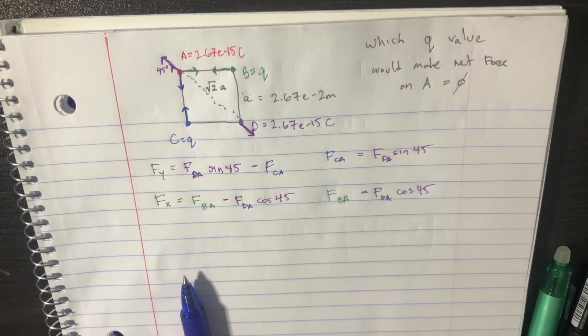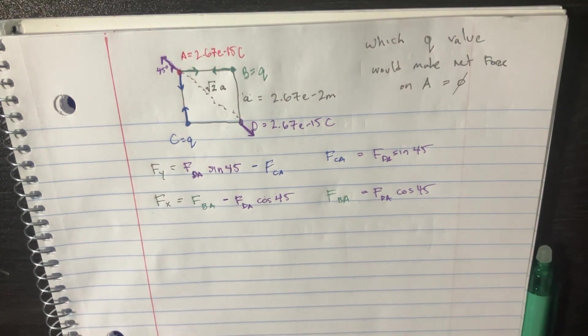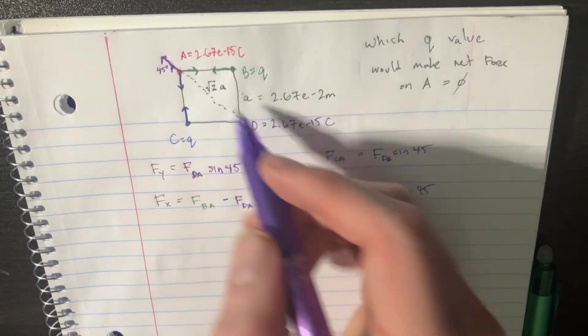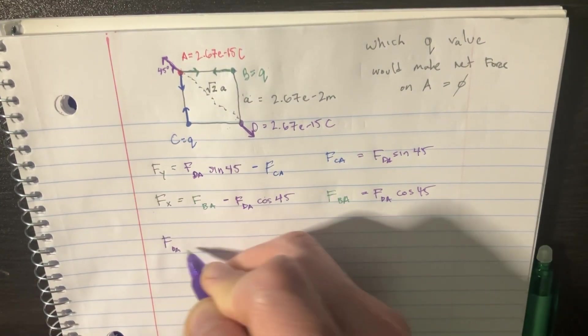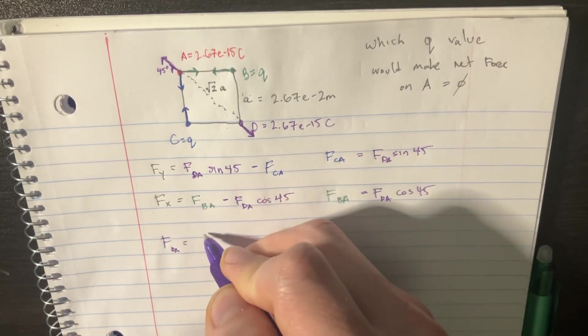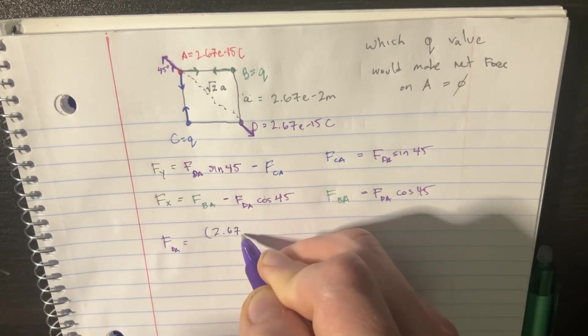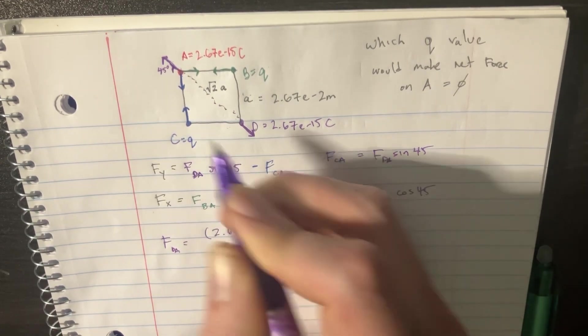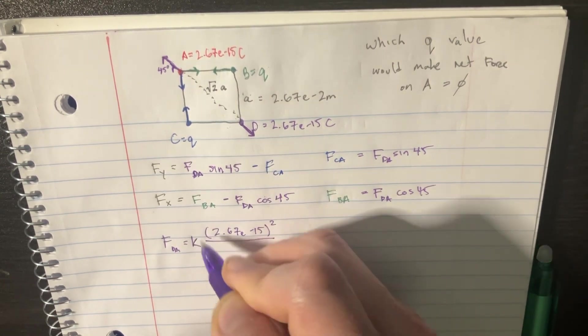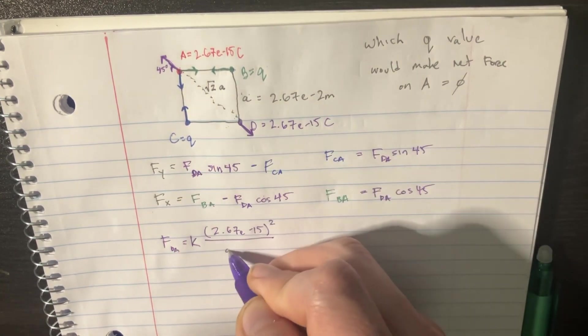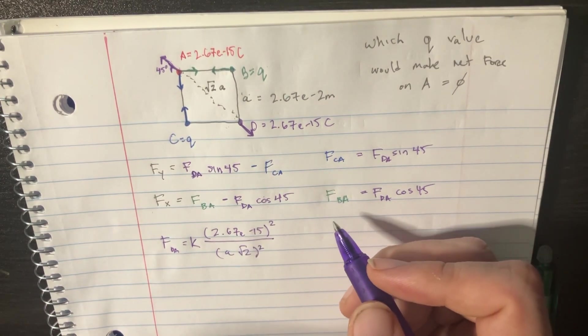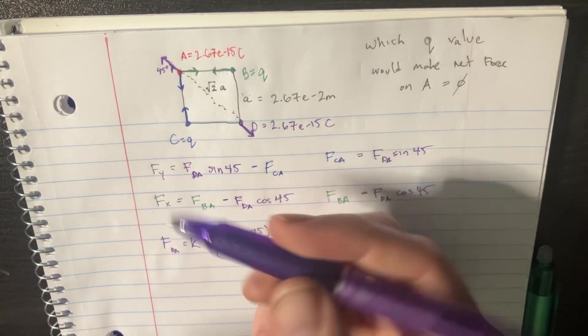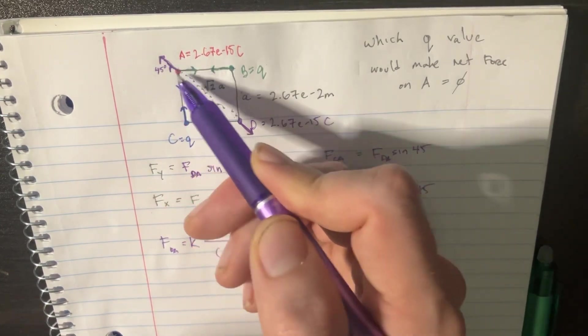So let's see if we can figure that out, Fda. That comes from this thing right over here. And we know that the force D on A is going to be equal to 2.67 E to negative 15. We're going to square that, and then we're going to divide that. Let's throw the K constant in there. We got A squared root of 2, and then that's squared. That's going to be the force,